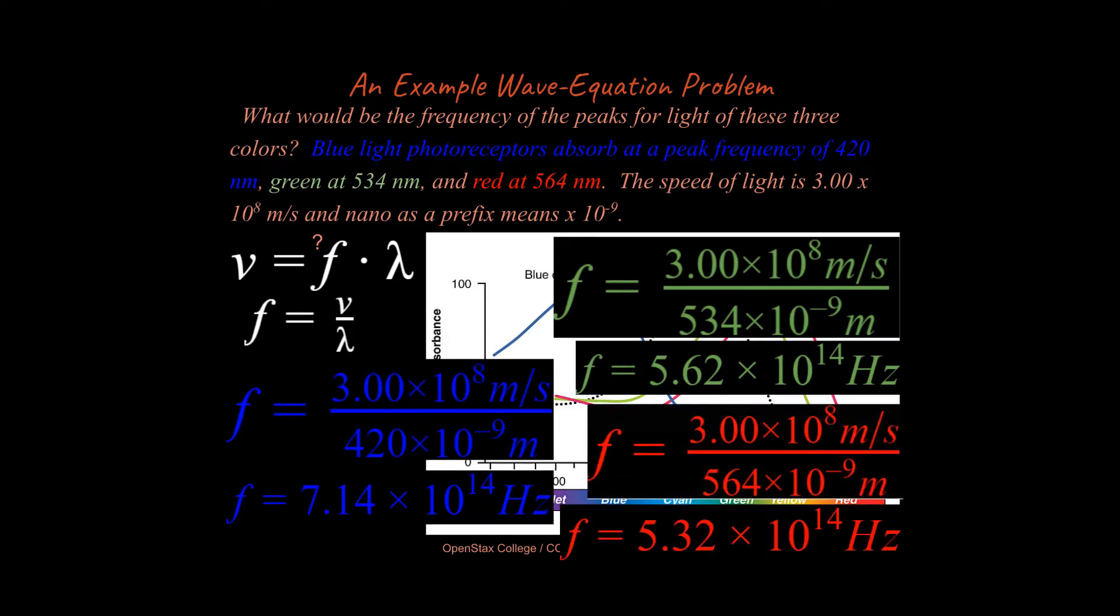And then we can do the same thing for green and the same thing for red. Notice once again that the frequency and the wavelength are inverse of each other. If one goes up, the other one goes down. So in this case, for instance, blue has the shortest wavelength of the three, but then it would have the highest frequency. Hopefully that makes sense.